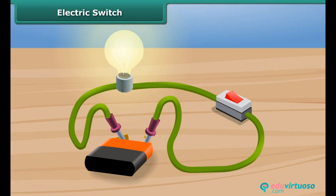The current flows through the circuit and the bulb starts glowing. A switch is a device to close or open a circuit.